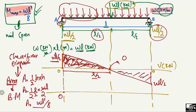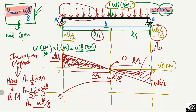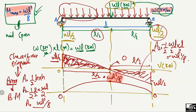Starting from zero at the left support (a pin, so no moment), the bending moment rises to a maximum of wL²/8 at the mid-span. For the right triangle, the height is -wL/2 and base is L/2, so area = ½ × (L/2) × (-wL/2) = -wL²/8. Adding wL²/8 and -wL²/8 gives zero bending moment at the right support. Therefore, the maximum bending moment at the mid-span is confirmed as wL²/8.